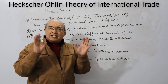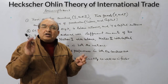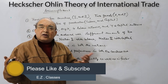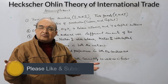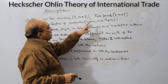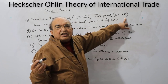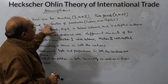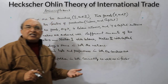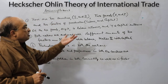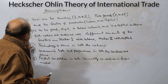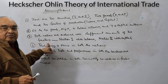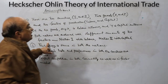The countries chosen should have different endowments of factors of production — for example, India is abundant in labor and the US is abundant in capital. There are two goods, X and Y, and two factors of production: labor and capital. Other factors like land or entrepreneurship do not figure in the model. Both nations are endowed with different amounts of these two factors.